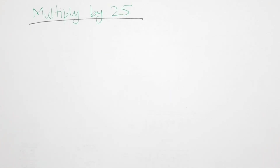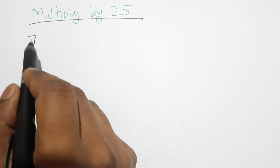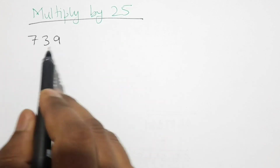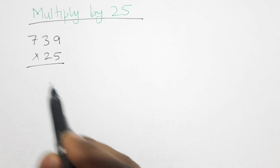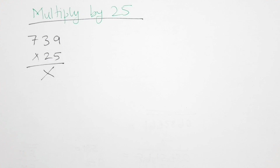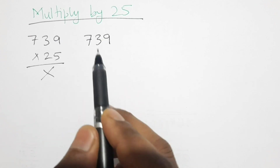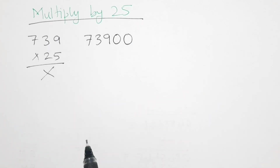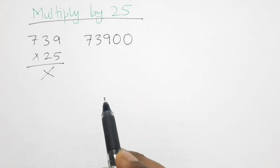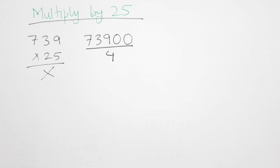Now let's learn the quick multiplication trick by 25. Take the three-digit number 739. In the shortcut method, first we multiply the given number by 100 — we just put two zeros behind to get 73900. Since 25 is one-fourth of 100, we then divide this number by 4 to get the product of 739 and 25.